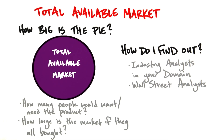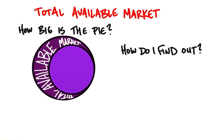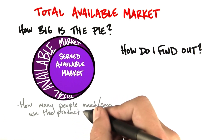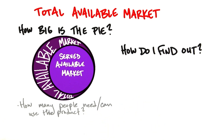The next step is: how big is my slice? We use the term served available market for that. The served available market means, instead of the theory that there are seven billion people in the world, how many people really can use, say, a mobile app? A mobile app is dependent on how many people have mobile smartphones.